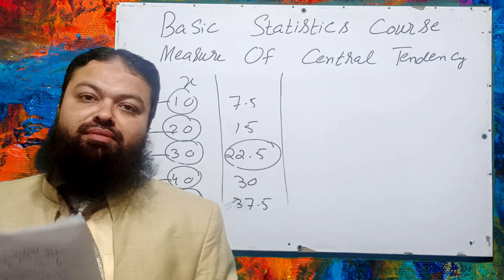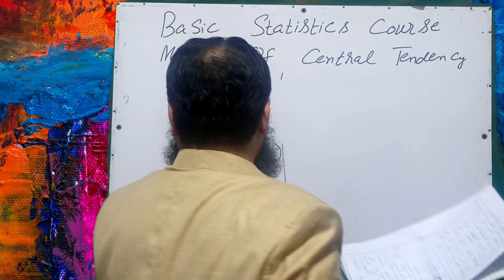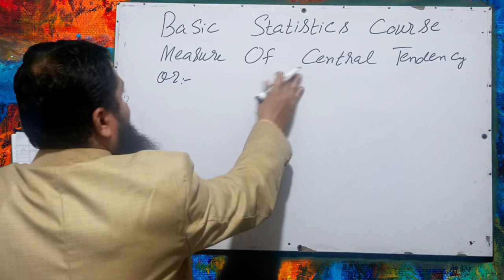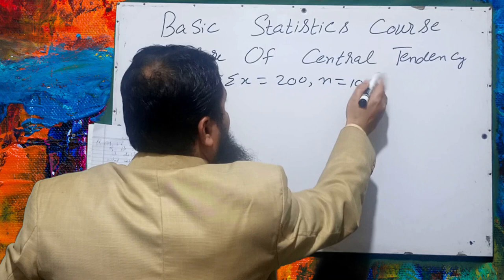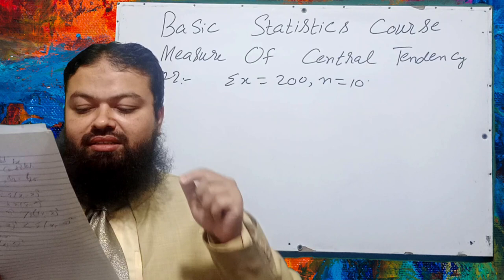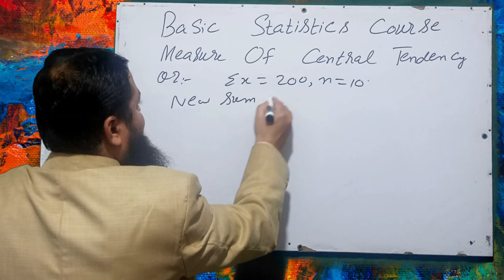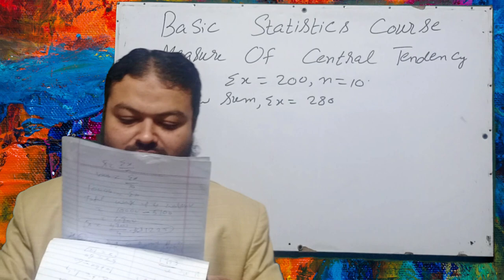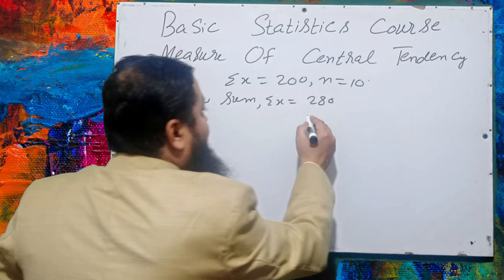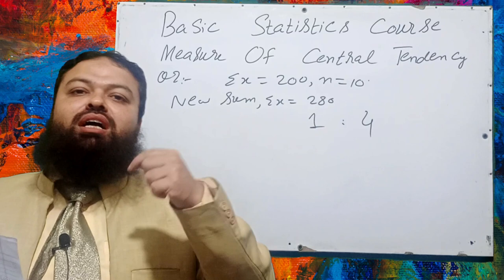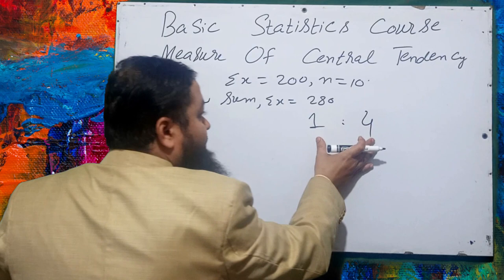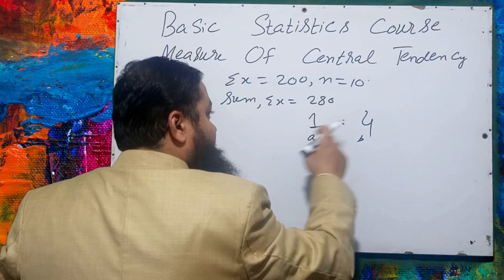Question number two: the sum of 10 numbers is 200. By the addition of two more numbers, the sum becomes 280. Find the two new numbers if the ratio between them is 1:4. This is a very important question. Let me first discuss the concept of ratio.